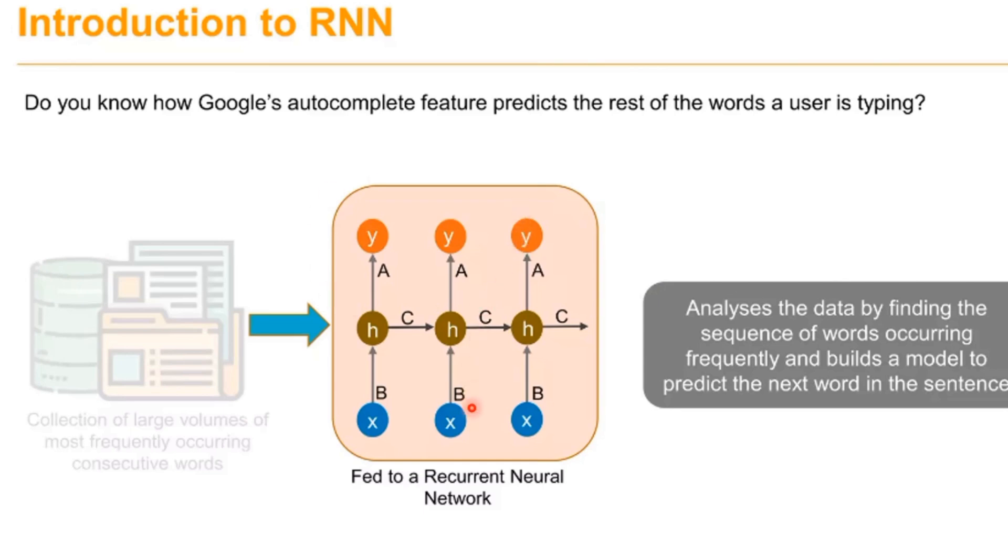it can automatically type what word you need to type next. With the help of Recurrent Neural Networks, using past data and present input, it automatically predicts the next value. It analyzes data by finding the sequence of words occurring frequently and builds a model to predict the next word in the sentence.